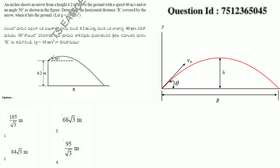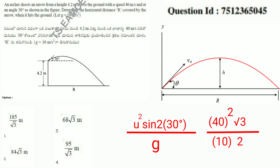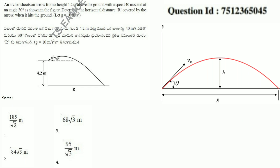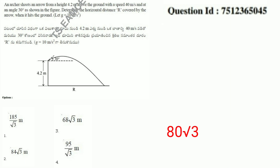Now we have at least a basic touch for formulas and results. If we substitute u² and speed squared — substituting u² sin2θ — that means sin60. So it becomes 40² × sin60 / 10, where g = 10. The answer is 80√3. So 80√3 is the case for ground-level launch.